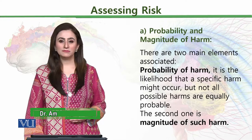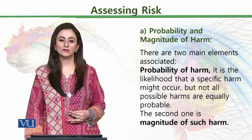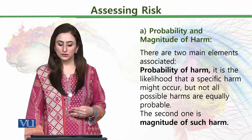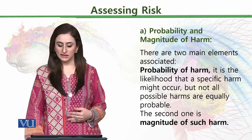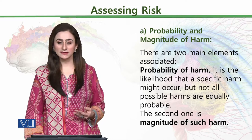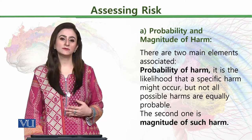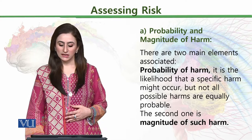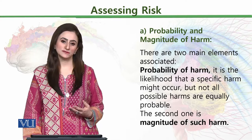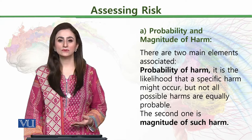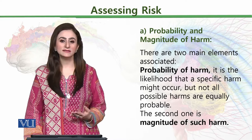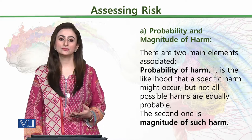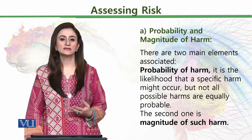The probability and magnitude of harm are something which need to be carefully examined. There are two main elements: first, probability of harm — the likelihood that a specific harm might occur, since not all possible harms are equally probable. Second, the magnitude of such harm — how dangerous and intense it is, and how we can eliminate it, because the magnitude can be either low or strong.